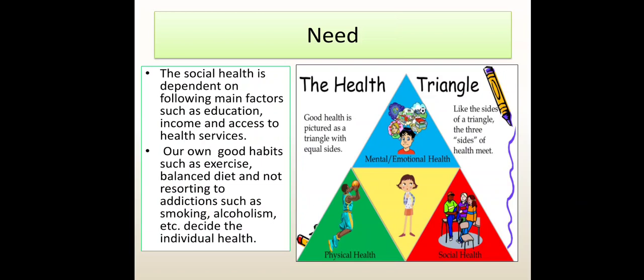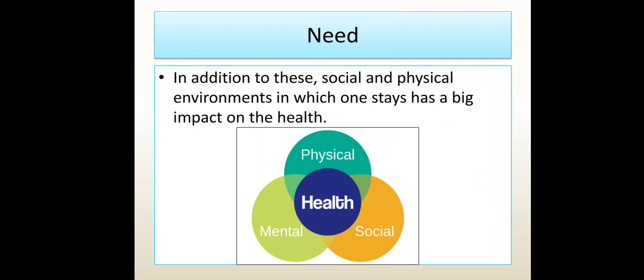Need: Social health is dependent on the following main factors such as education, income, and access to health services. Our own good habits such as exercise, balanced diet, and not resorting to addiction such as smoking, alcoholism, etc., decide the individual health. In addition to these, the social and physical environment in which one stays has a big impact on health.